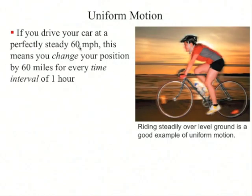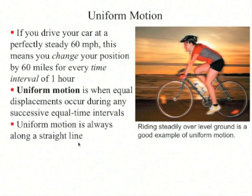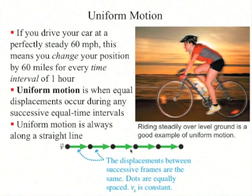If you drive your car at a perfectly steady 60 miles an hour, this means that you're changing your position by 60 miles for every time interval of one hour. This is called uniform motion, when equal displacements occur during successive equal time intervals. A good example is riding steadily over level ground. Uniform motion is always along a straight line, as shown in this motion diagram. The displacements between successive frames or dots are equally spaced.